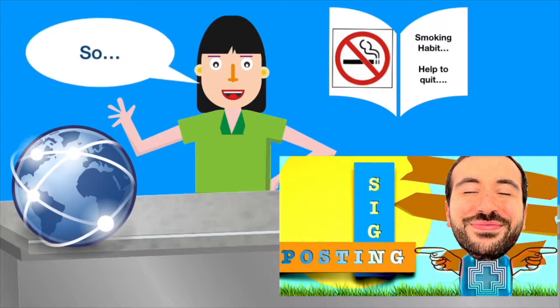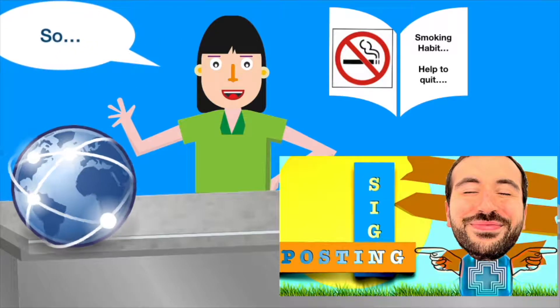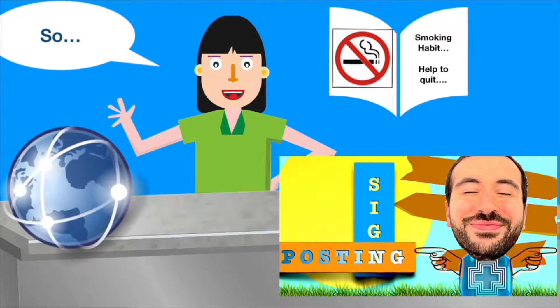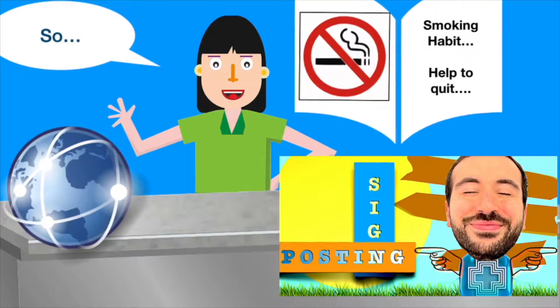These patient groups are an example of those that pharmacy has a role in providing opportunistic healthy lifestyle advice to. Here, the pharmacy would give advice verbally but may back it up with other information such as internet links or leaflets and signposting, if necessary, to other healthcare professionals. Do you see how the different services link in together?